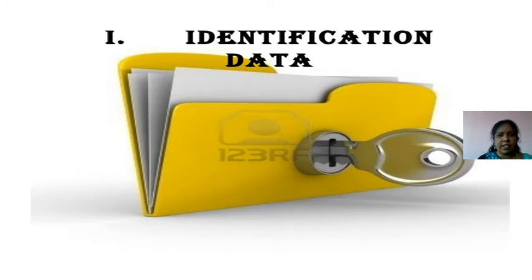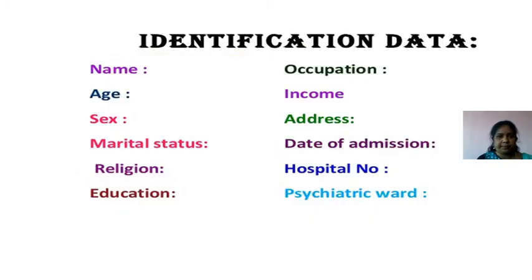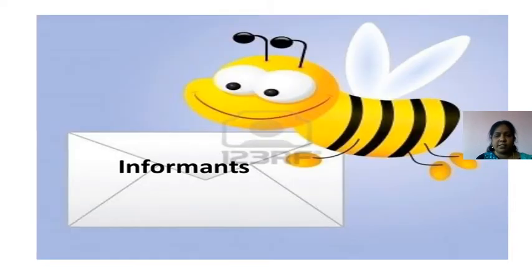First, we will see the identification data. In this, the following items will be recorded: name, age, sex, marital status, religion, occupation, education, income, address, date of admission, and hospital number.